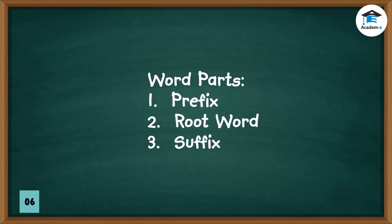Many words in the English language are made up of word parts called prefixes, root words, and suffixes. These word parts have specific meanings that, when added together, can help you determine the meaning of the word as a whole. Knowing the meanings of common word parts gives you the building blocks for a multitude of words in the English language.